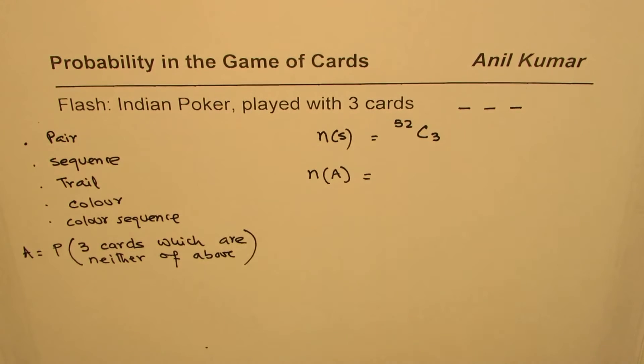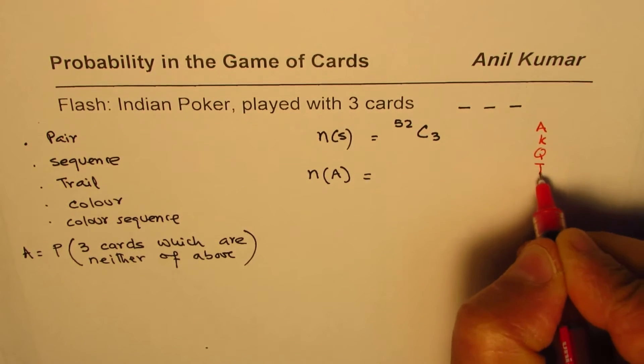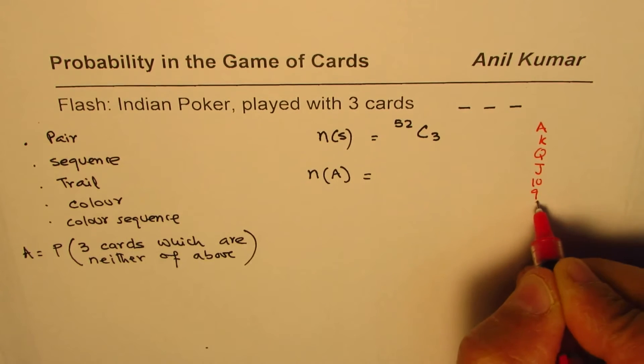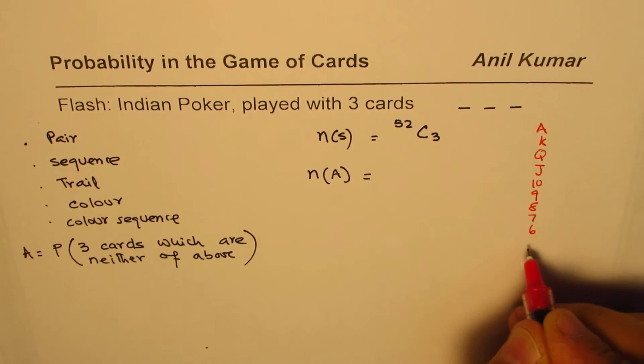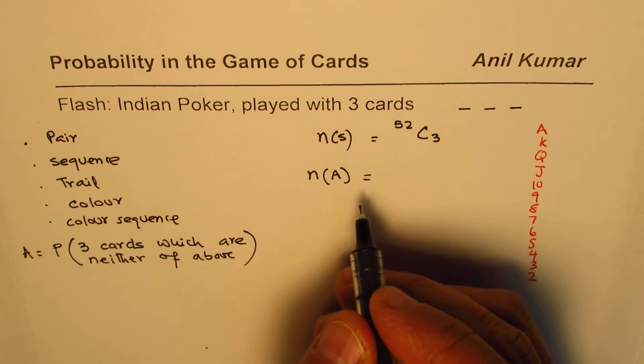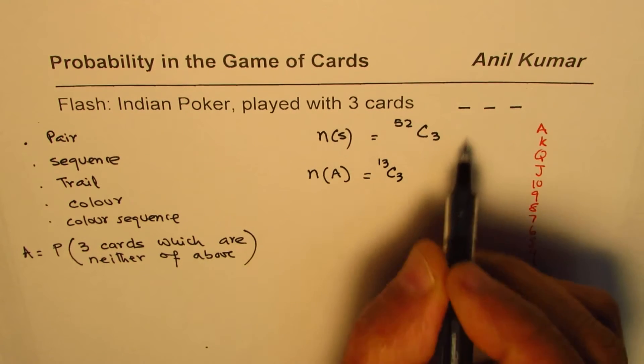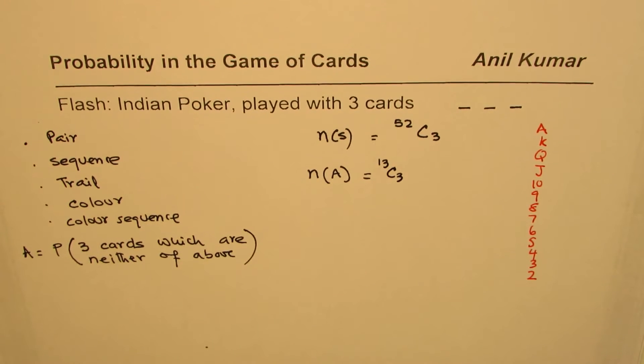So what we have here is the value of the card is from two to ace. Two, three, four, five, six, seven, eight, nine, ten, jack, king, queen. Let me write down, so we have ace, king, queen, jack, ten, nine, eight, seven, six, five, four, three, two. So these are 13 cards which are with us, and we are actually selecting three of these. So we have 13 C 3.